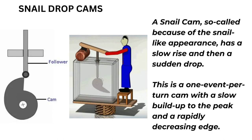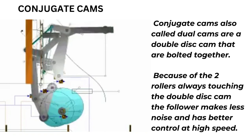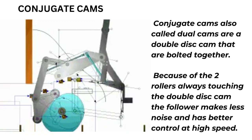Conjugate cams, also called dual cams, are a double disc cam that are bolted together. Because of the two rollers always touching the double disc cam, the follower makes less noise and has better control at high speed.